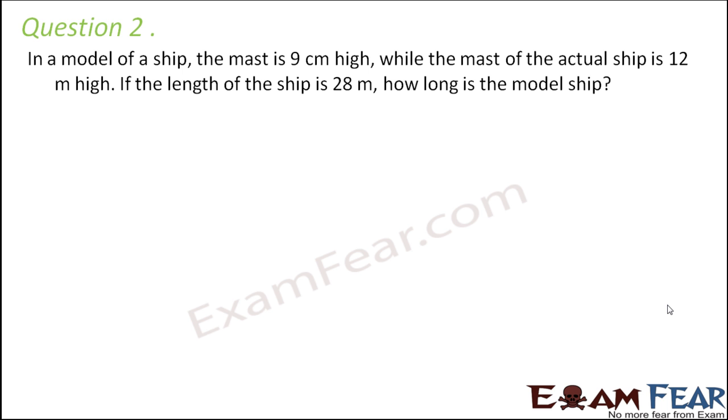Question number 2. In a model of a ship, the mast is 9 cm high while the mast of the actual ship is 12 m high. If the length of the ship is 28 m, how long is the model ship? So in this case again we have two quantities involved. One quantity is the dimension of the ship in the model and the other quantity is the actual dimension. The dimensions in model is directly proportional to actual dimension.